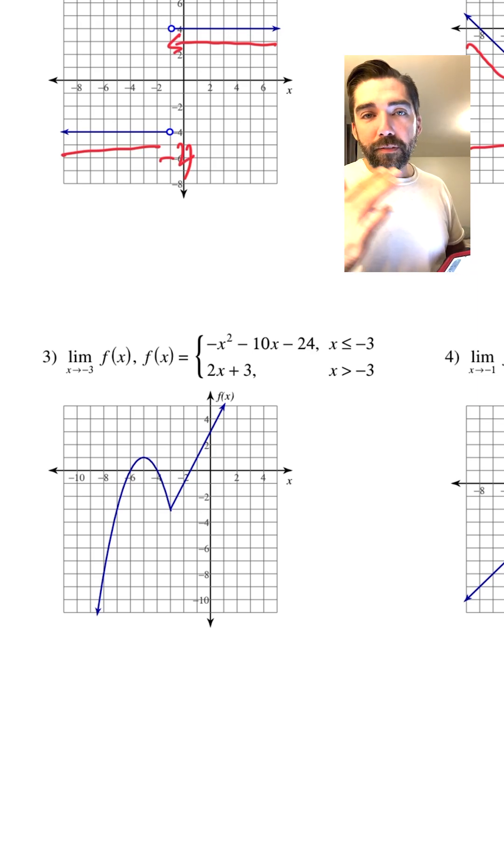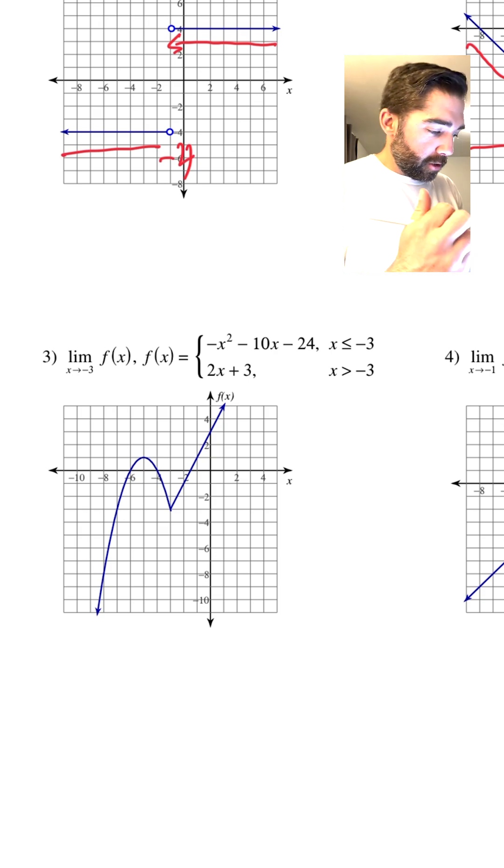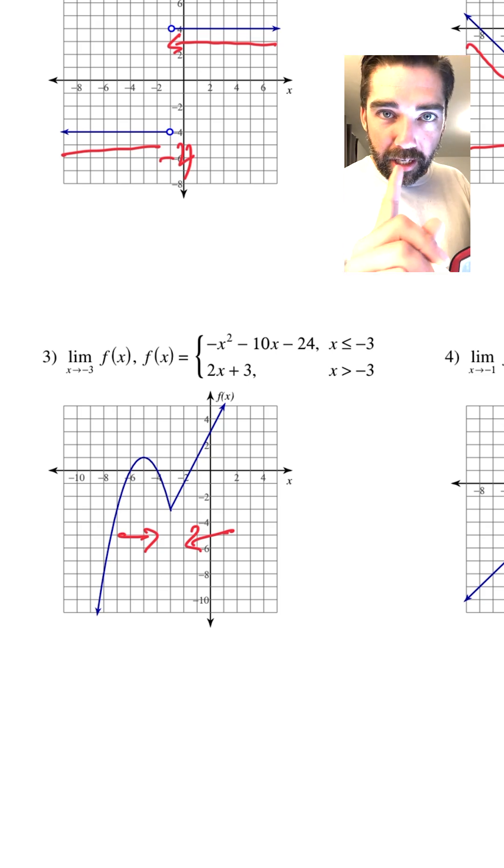So when it doesn't have a left or a right, we've got to just go from both sides. Does it approach the same spot? So from the left and from the right, are we approaching the same location?